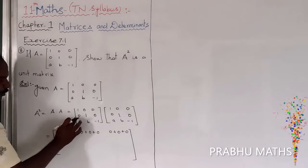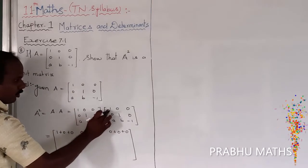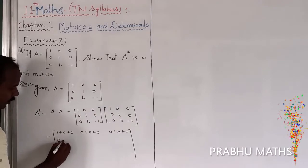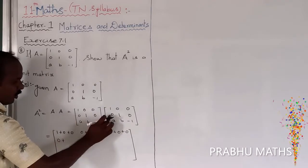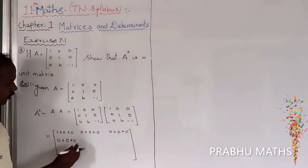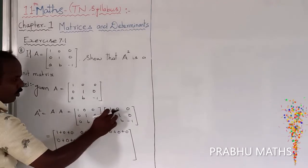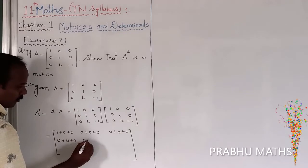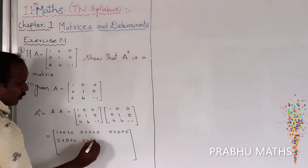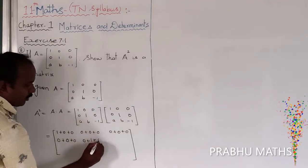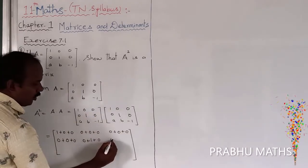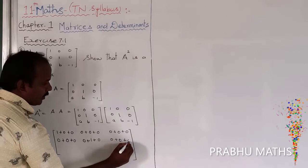Next, second row. Second row, first column: 0 into 1 plus 1 into 0 plus 0 into A — equals 0. Second row, second column: 0 into 0 plus 1 into 1 plus 0 into B — equals 1. Second row, third column: 0 plus 0 plus 0 — equals 0.